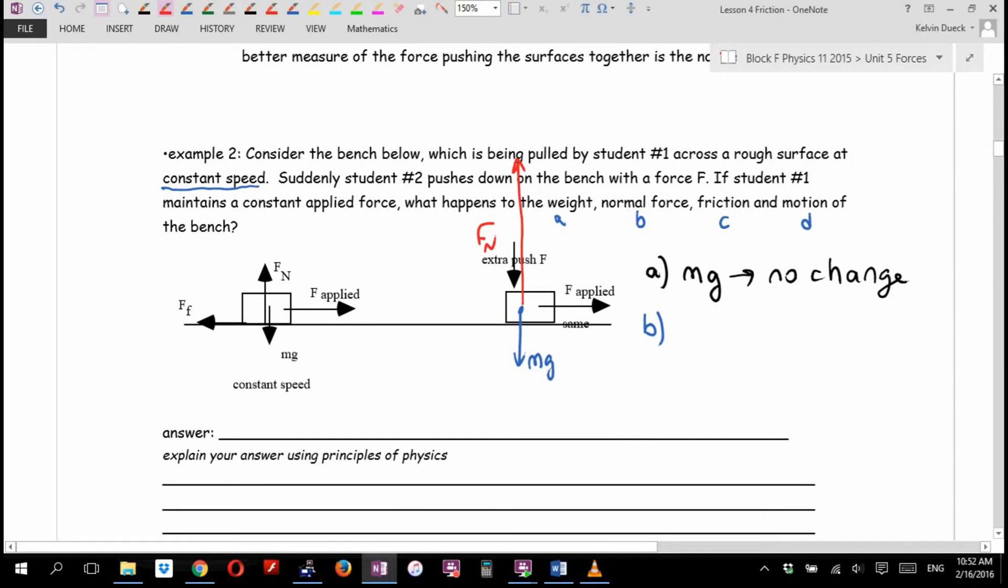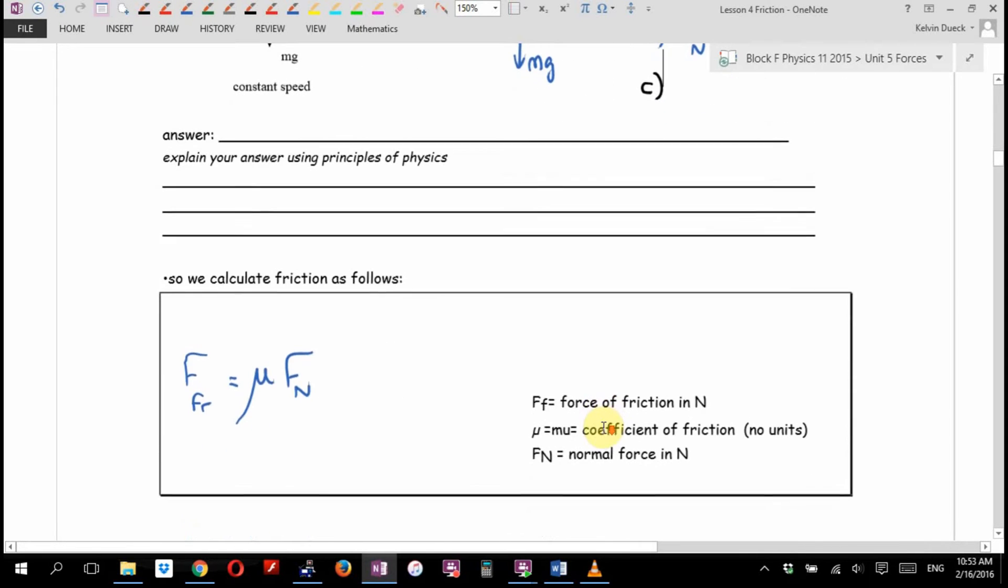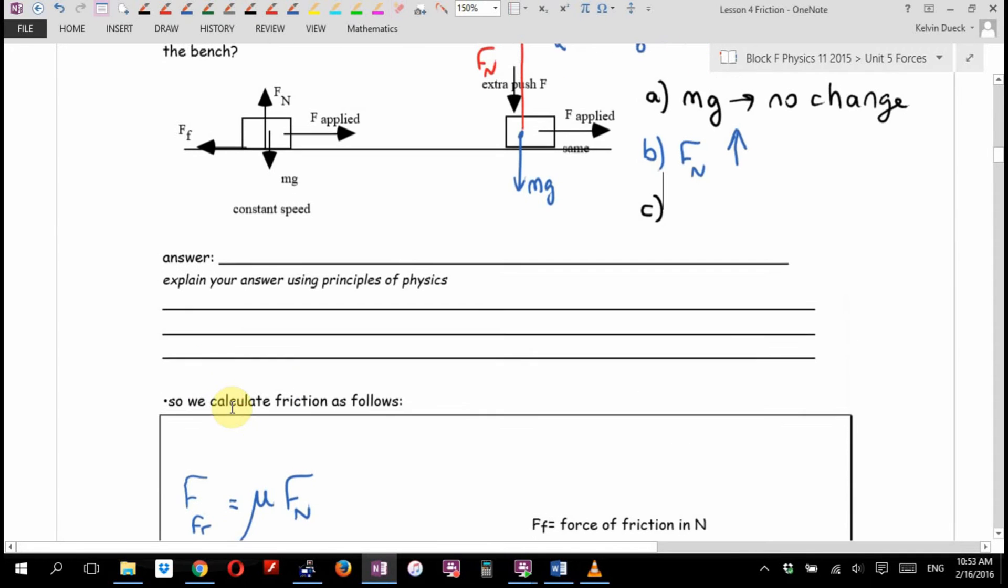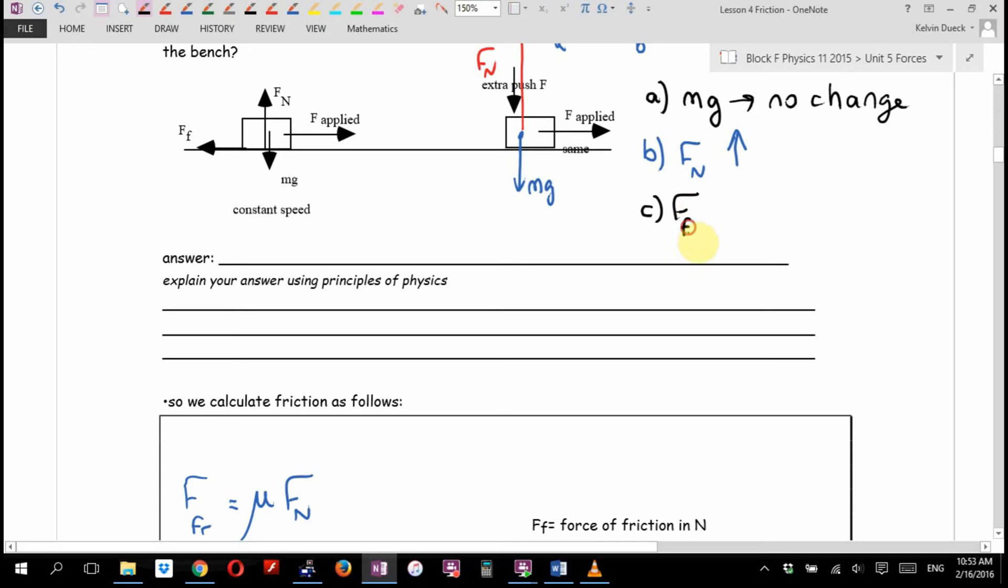Which force is changing? Well, now, this free body diagram has both Mg down and this extra push F down. Is this bench sinking into the ground like quicksand? Is it flying into the air like Superman? Which force just got way bigger? The normal force. Compared to the original normal force, it just got way bigger. So the normal force increases, gets bigger. What happens to the force of friction? Well, I just told you our equation for calculating friction is mu times the normal force. Hey, if this gets bigger, what happens to the force of friction? Yep. What happens to the motion of the object? Stops.